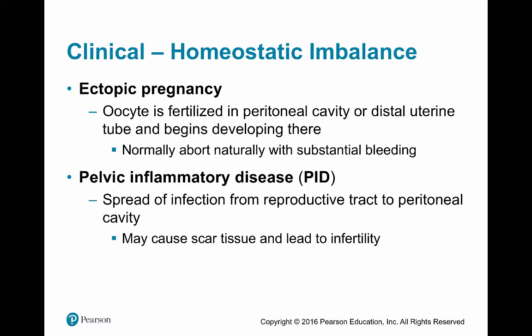There are homeostatic imbalances associated with the uterine tube. First is ectopic pregnancy, where the oocyte is fertilized in the peritoneal cavity or distal uterine tube and begins developing there. It normally aborts naturally with substantial bleeding and pain, but if it doesn't terminate naturally, surgery is required — this can be fatal. There is also pelvic inflammatory disease (PID), which is a spread of infection from the reproductive tract to the peritoneal cavity, and may cause scar tissue leading to infertility.